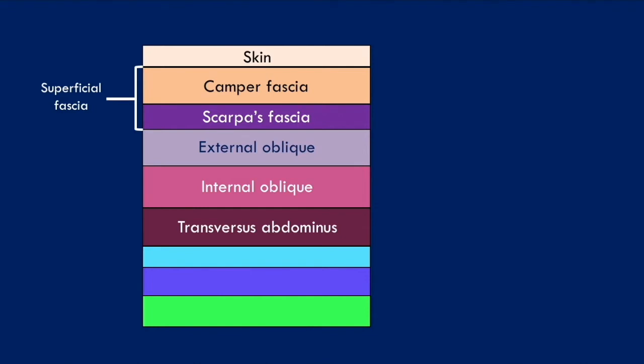Deep to the internal oblique muscle is the transversus abdominis muscle. Below that is the transversalis fascia, and below the transversalis fascia is the extraperitoneal fat. The deepest layer of the anterior abdominal wall is the parietal peritoneum, which covers the peritoneal cavity.